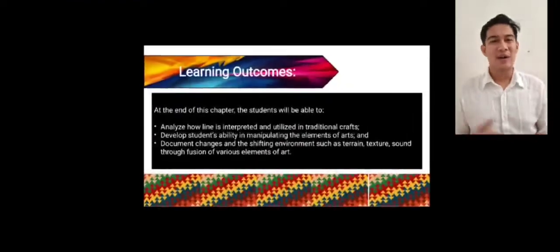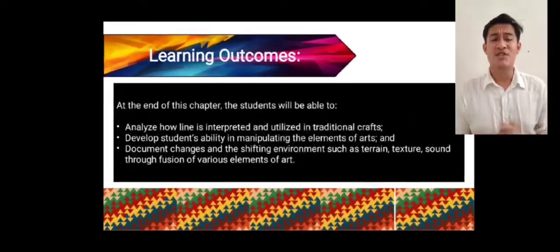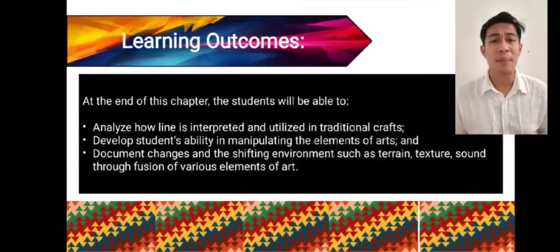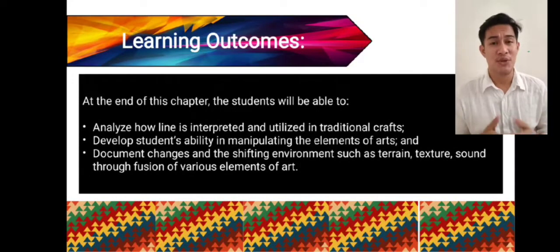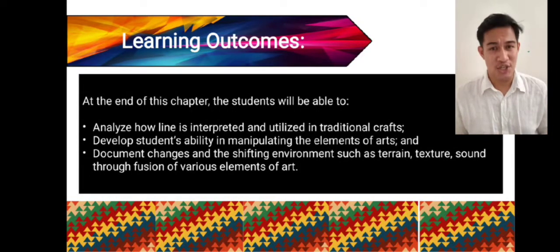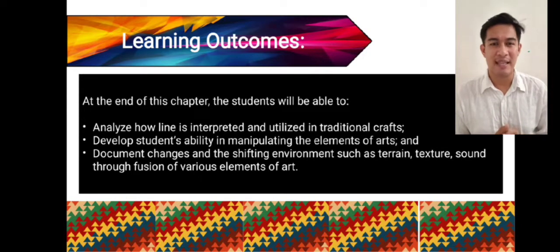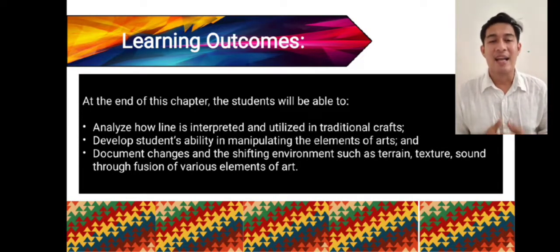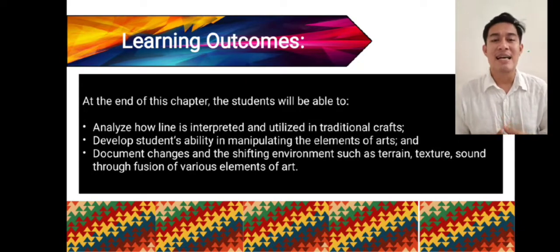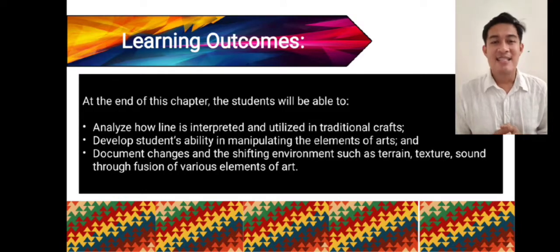Learning Outcomes. At the end of this chapter, students will be able to analyze how a line is interpreted and utilized in traditional crafts, and develop students' ability in manipulating the elements of art and document changes in a shifting environment such as shape, texture, sound, and the evolution of various elements of art.